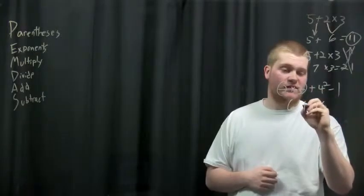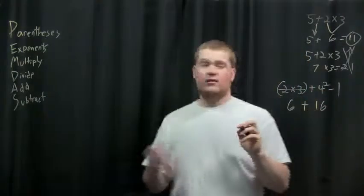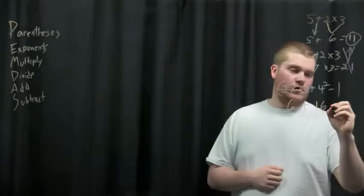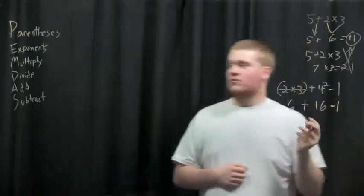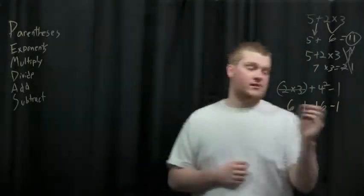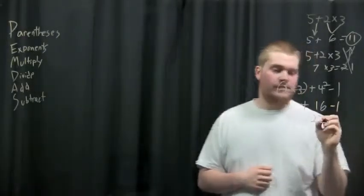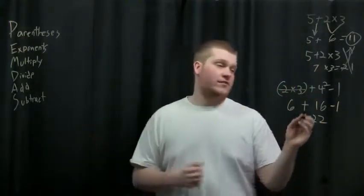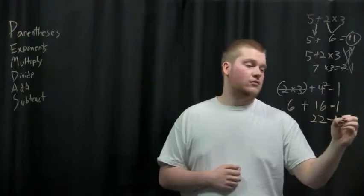So what you're going to do is bring down this plus sign to keep the problem going, then you're going to bring down this minus 1. So now what do you have? You always go left to right. Is there any adding to do? Yes, 6 + 16. So you're going to get 22, and then you're going to subtract after that. So 22 - 1 equals 21 as your final answer.